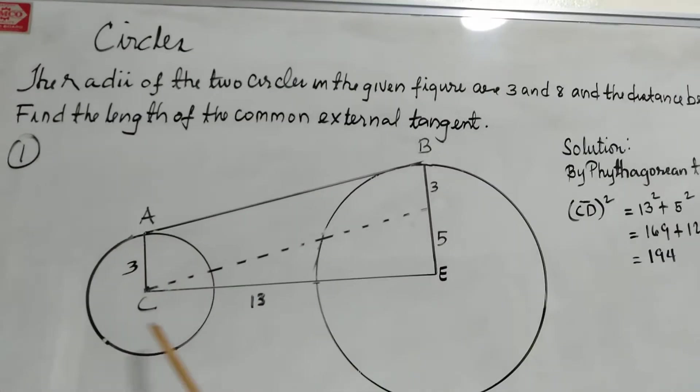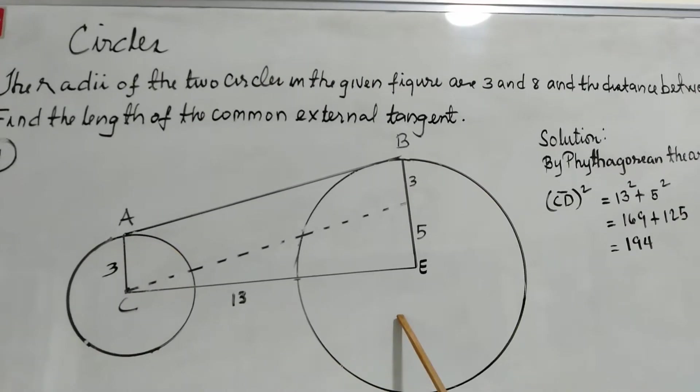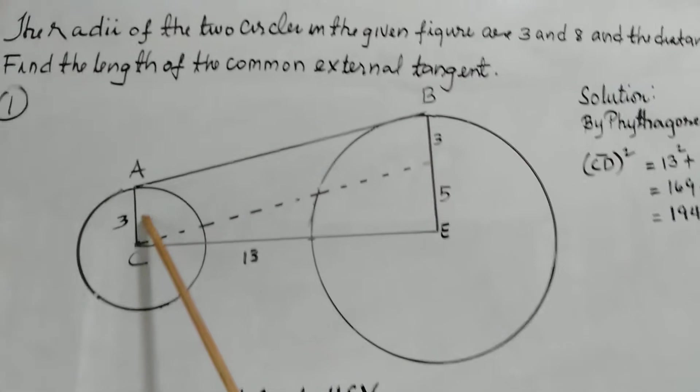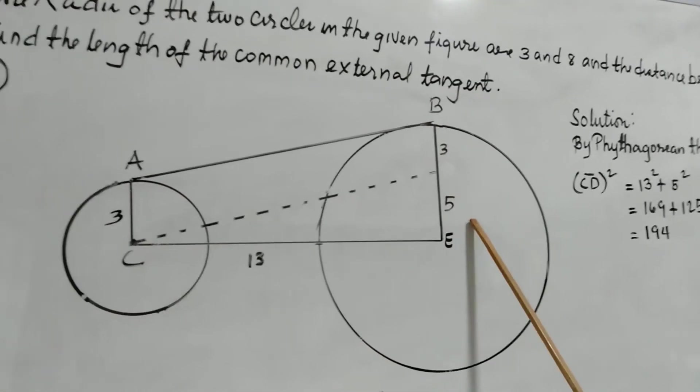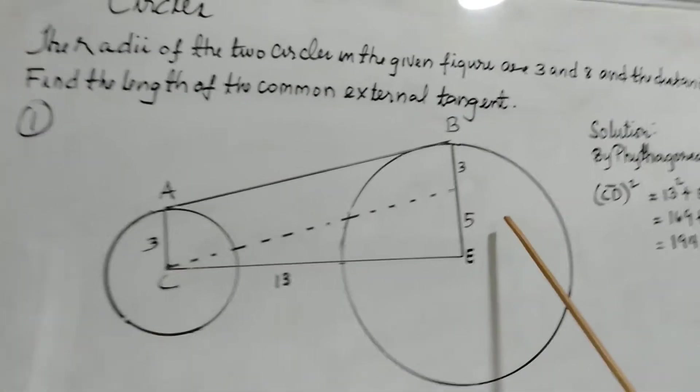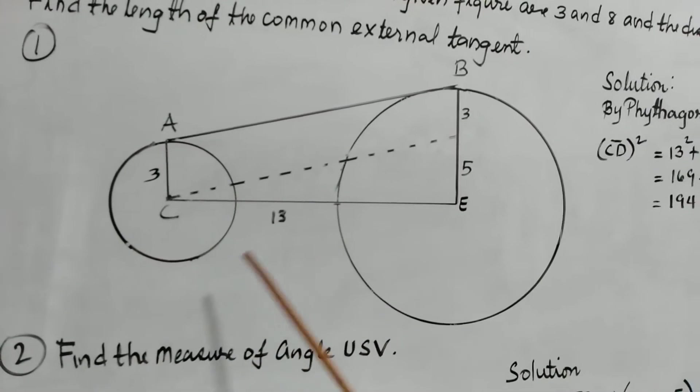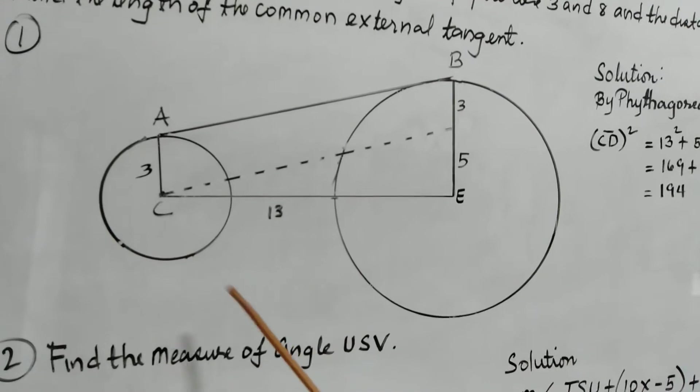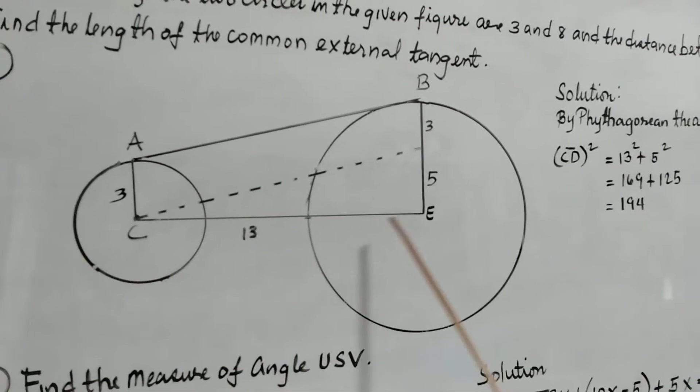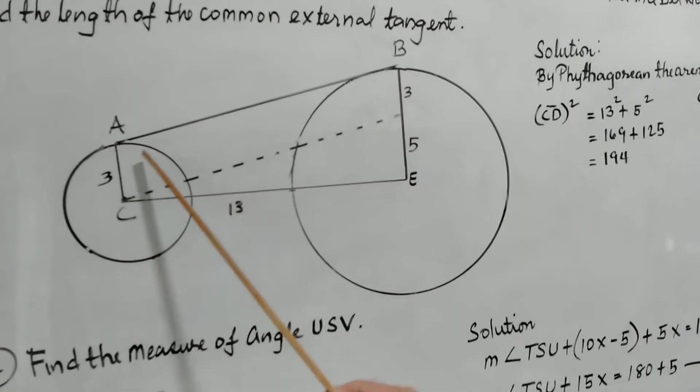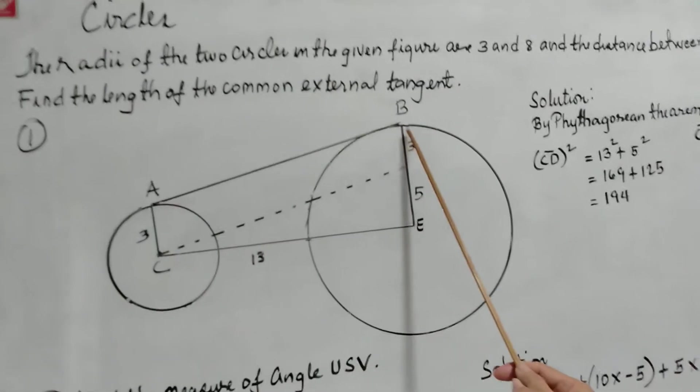We are asked to find the length of the common external tangent. So these are the two circles that we will consider. The first one having a radius of 3, and the second one is 8. Let's say inches. So this is circle C, and this is circle E. We are asked to find the common external tangent, AB.